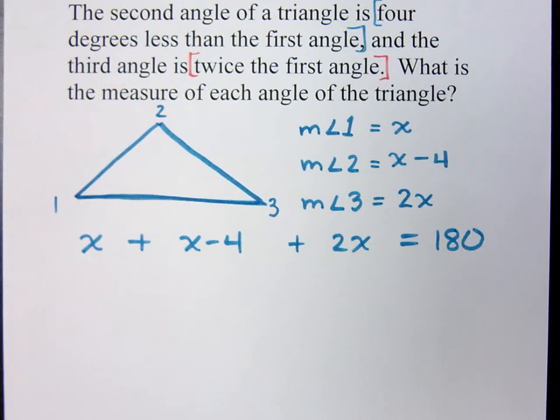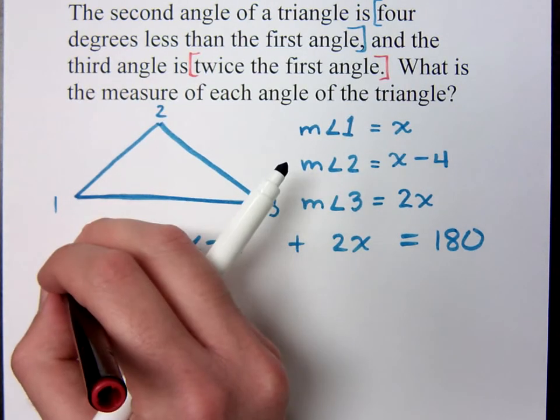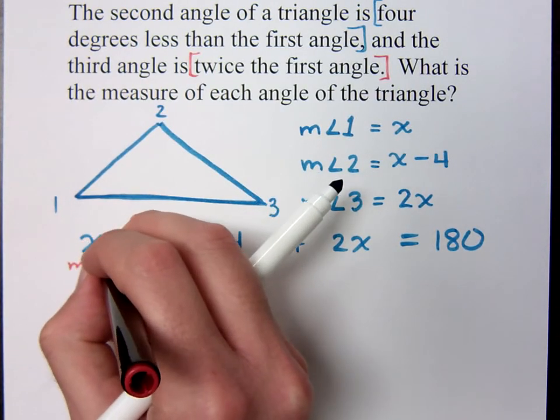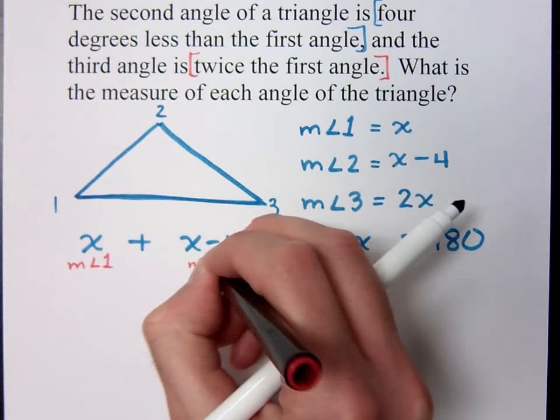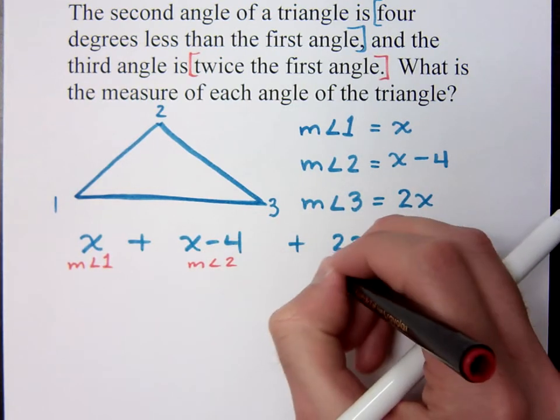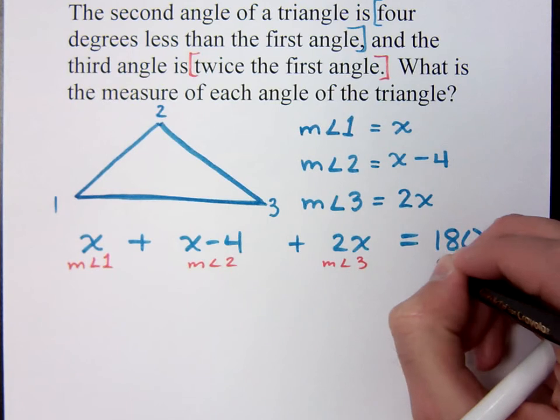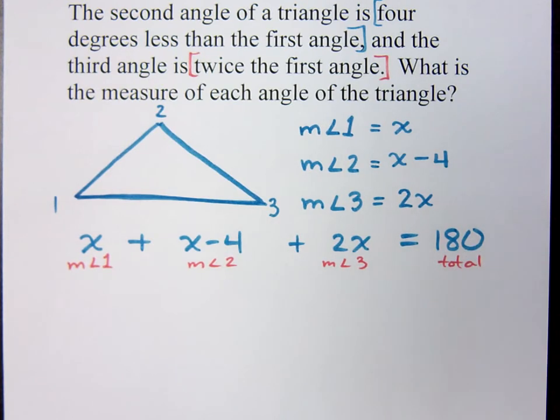Say again? Four x minus four. Right. When I go to combine like terms, that's what I'll have. But let's make sure we understand. This is the measure of angle one, the measure of angle two, the measure of angle three, and then this is your total. You guys with me on that? It's the sum of the parts equals the total. So you get to figure out the total if you didn't know it.